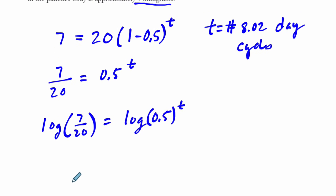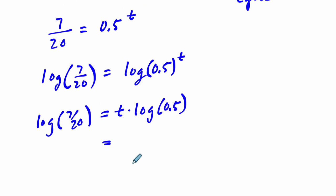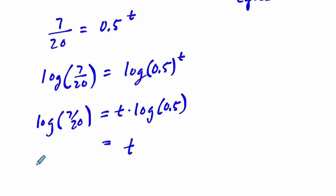I'll just do the common log. The log of both sides, 7/20 equals the log of 0.5 to the T. Here we can use a property of logarithms. I can multiply T over here instead of using it as the exponent. It equals T times the log of 0.5. And that's the log of 7/20. And we want to know what T is. So let's divide both sides by the log of 0.5.